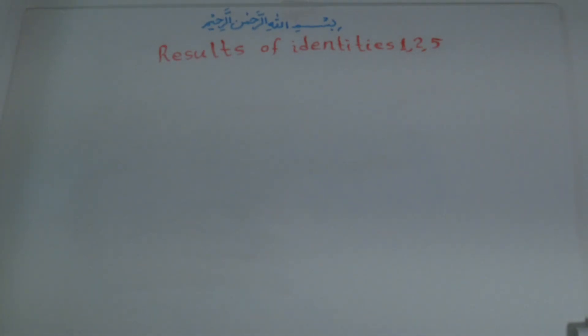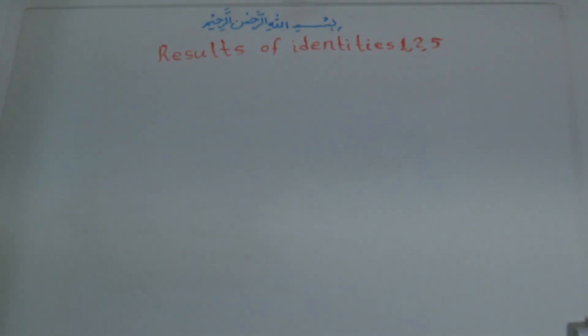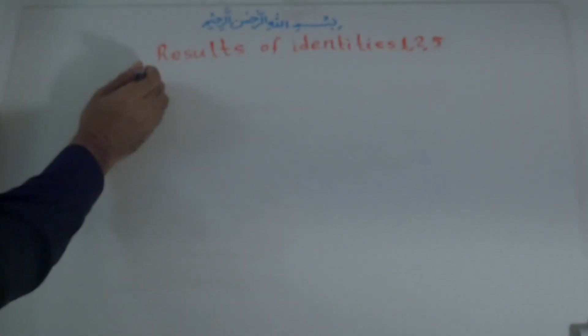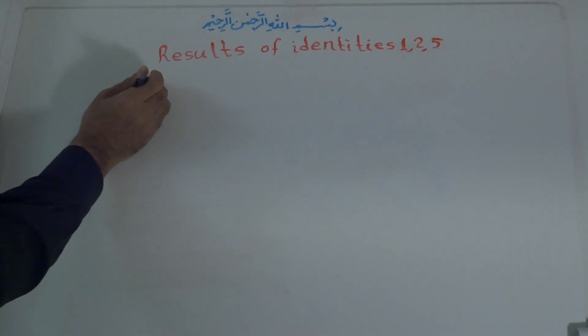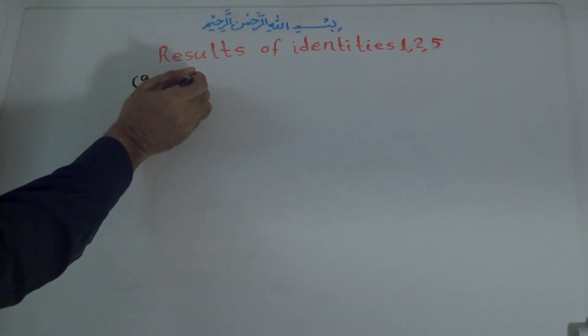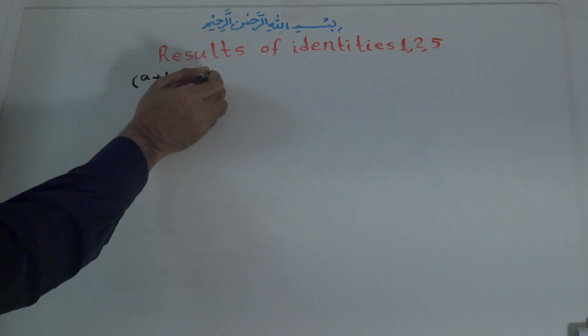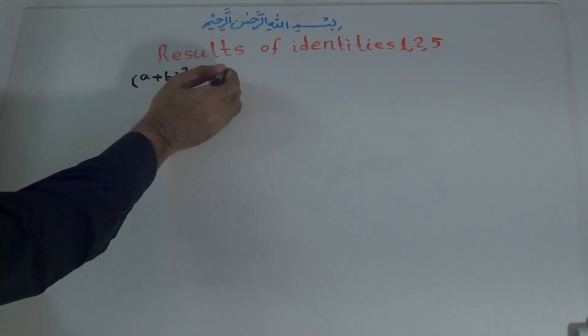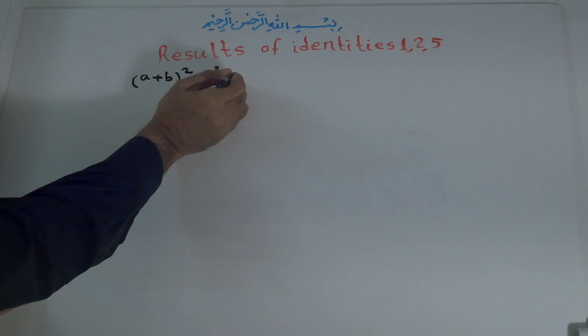Hi, welcome to math class. Our title is 'Results of Identities Number One, Two, and Five.' Identity number one: a plus b to the power of two is equal to a to the power of two plus 2ab...